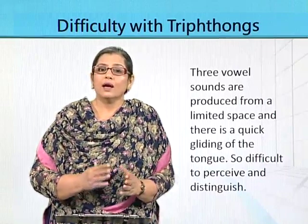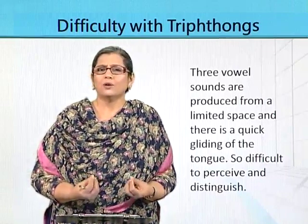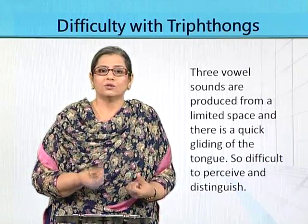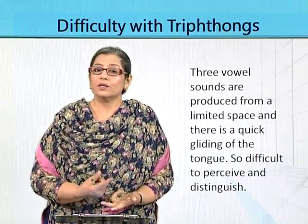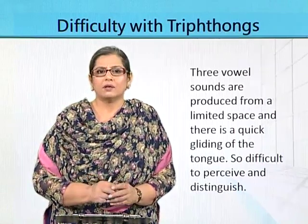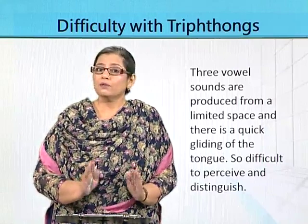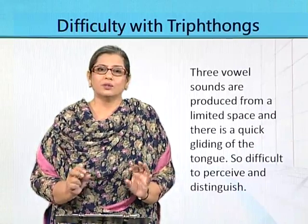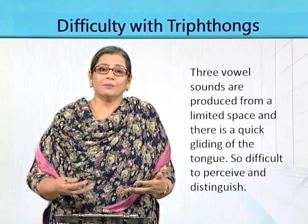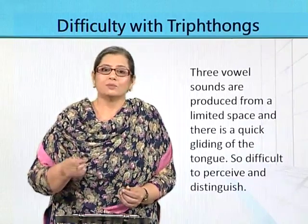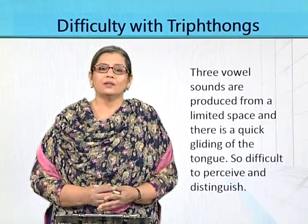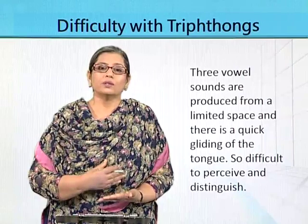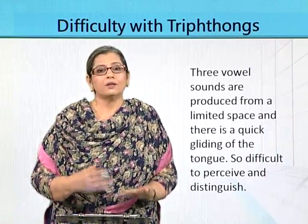Triphthongs end on schwa, and schwa is already a complicated idea. If you ask which single vowel sound is most difficult to pick up, the answer is schwa — because it is a very small, unstressed, and lax sound. Powerful sounds like 'ee' or 'oh' you can easily pick up, but schwa is very lax by comparison. This is the reason we say a triphthong is the most difficult concept when discussing different types of vowel sounds.